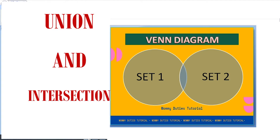Hi guys, welcome again to my channel. Today we're going to study about Venn diagrams. A Venn diagram shows the relationship between a group of different things — it's a set, and it uses overlapping circles to show how things are alike and different. It's also our way to sort data in two or three circles with overlaps in the middle.